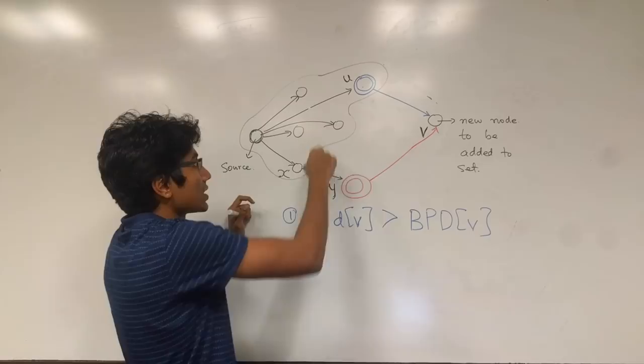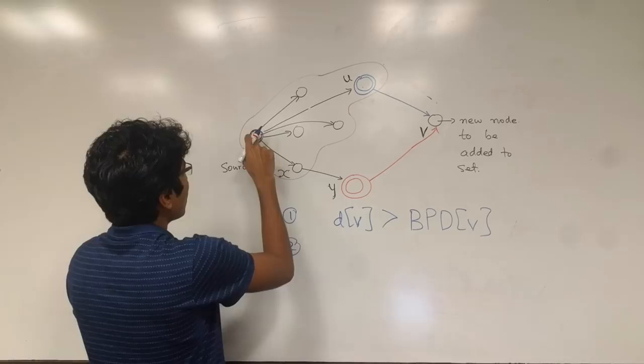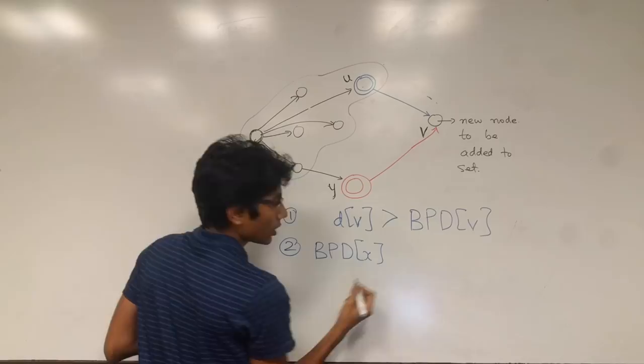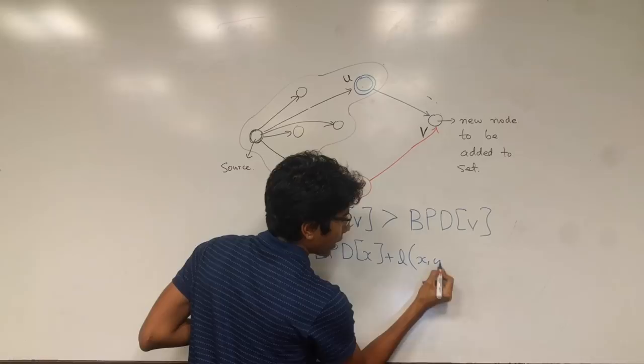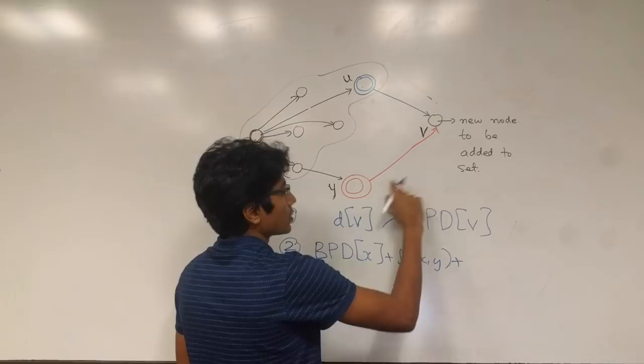So the condition we get is that distance, best possible distance to x, plus the length from x to y—this edge, it has to exist, there has to be one edge which is going from to outside the visit set—this plus this distance which is some positive quantity is equal to the best possible distance to node v. Okay, this is our claim.